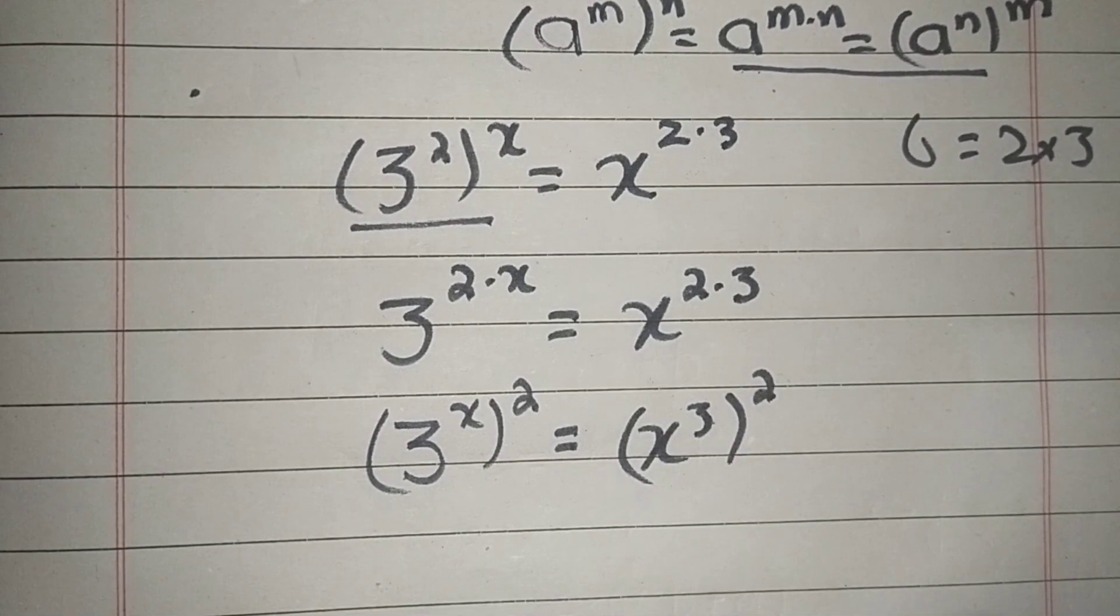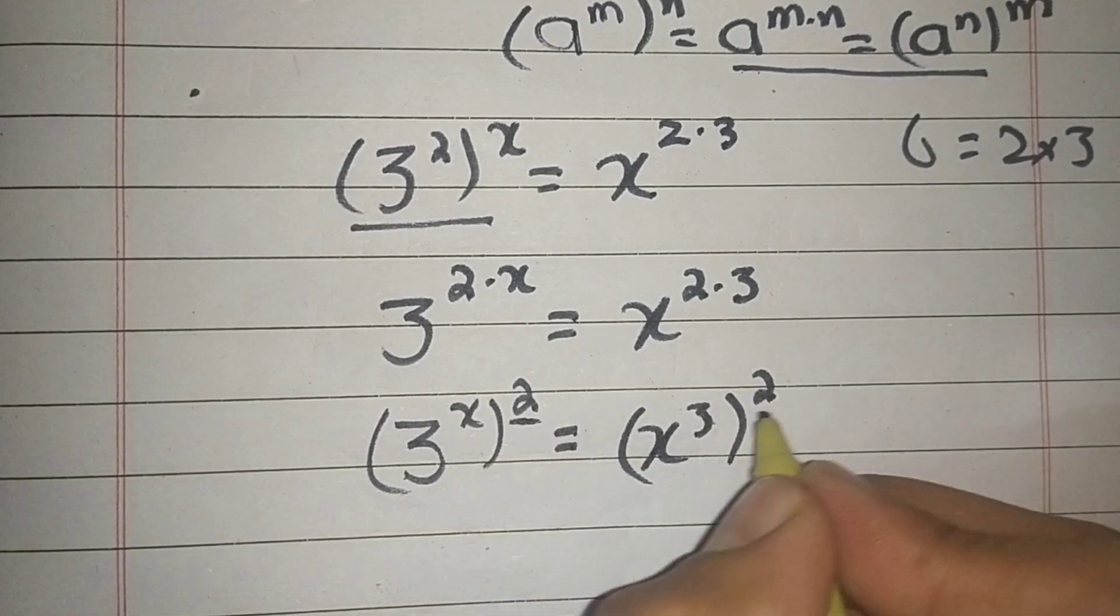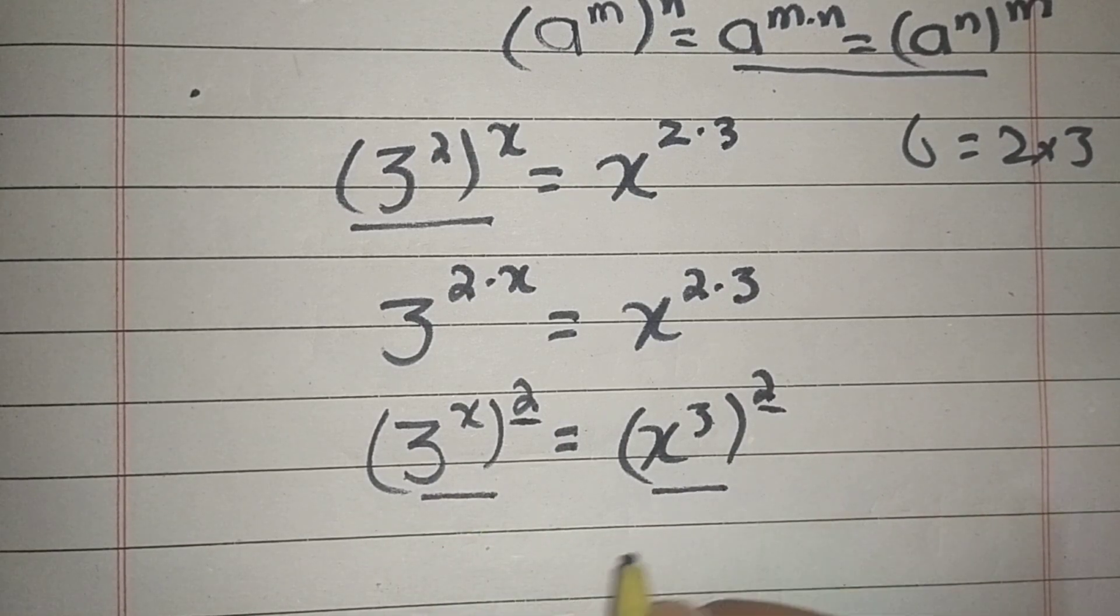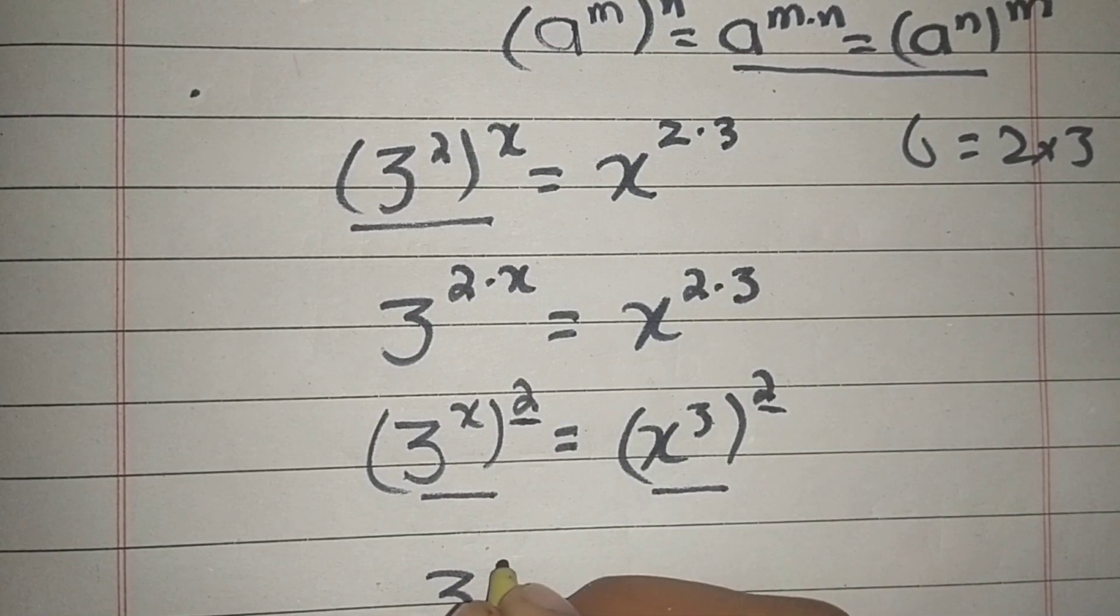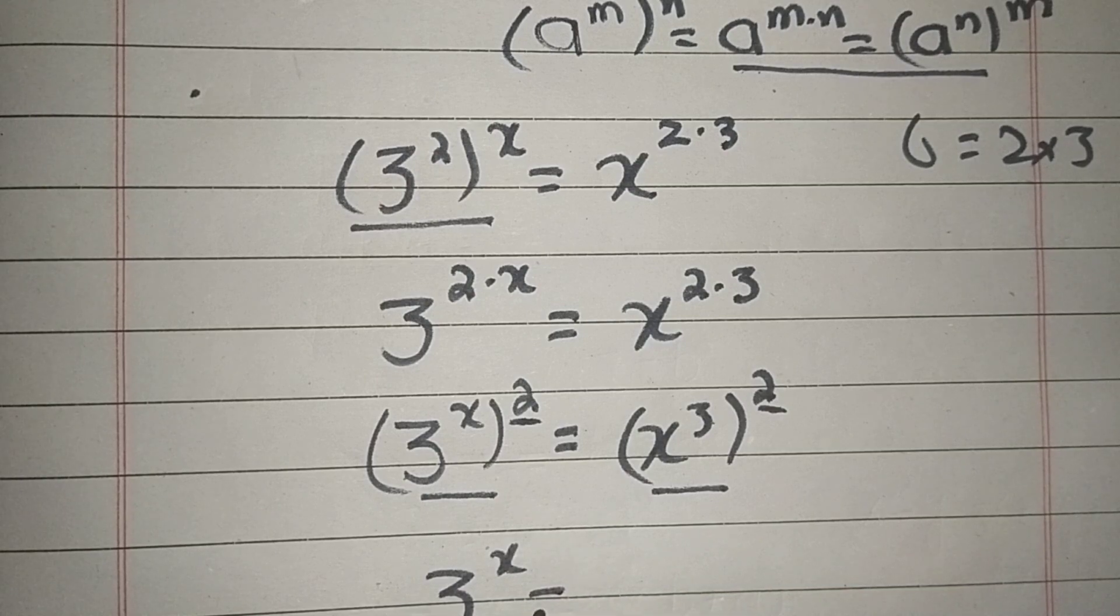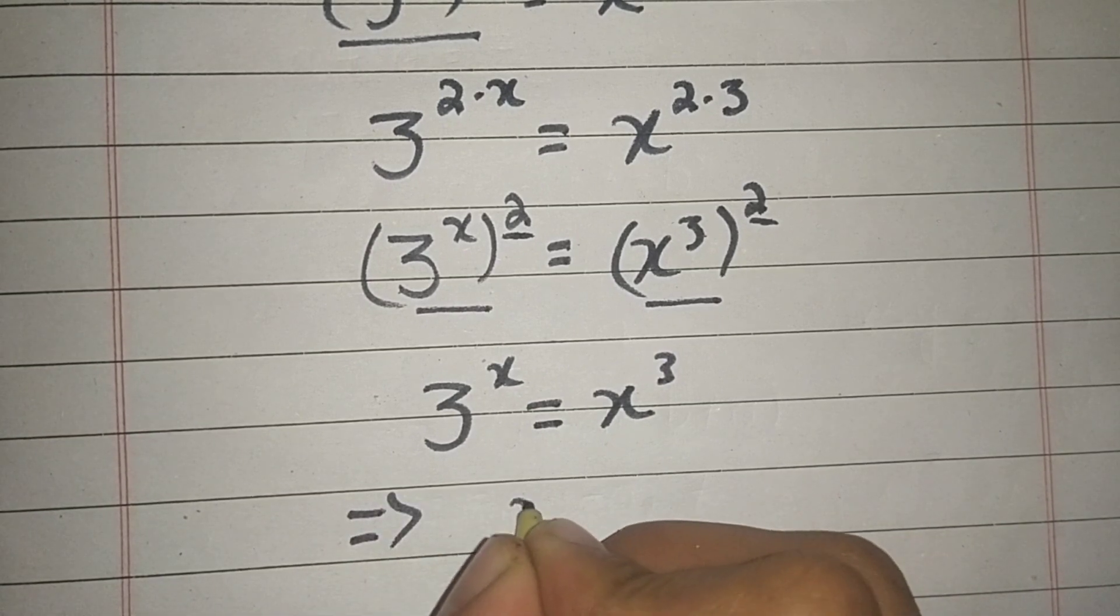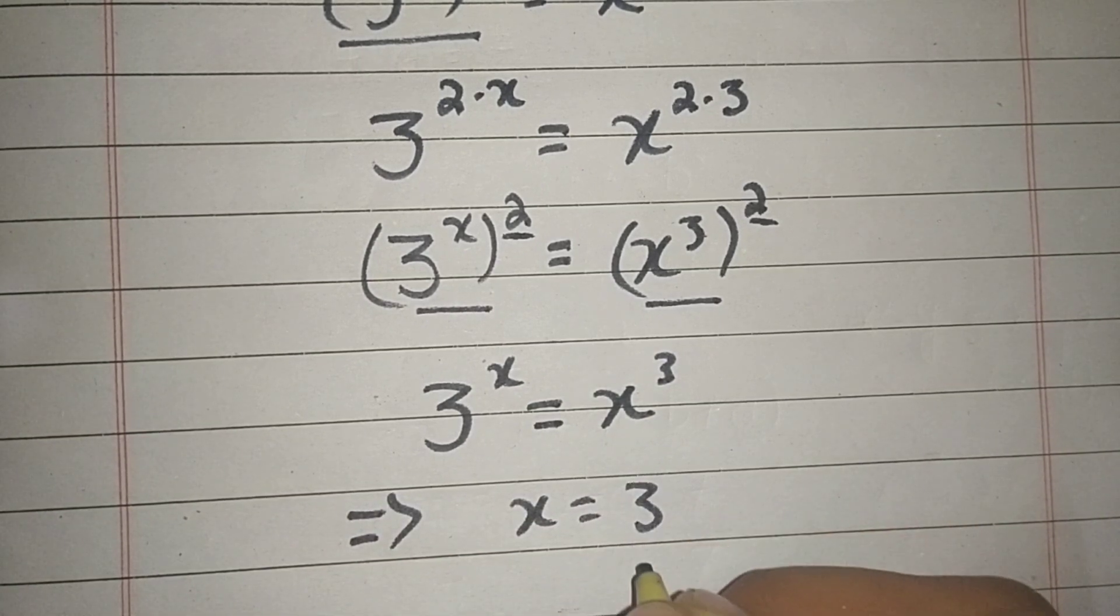From here, we have the same powers, so we can equate the bases: 3^x equals x³, and this implies that x equals 3. Thank you.